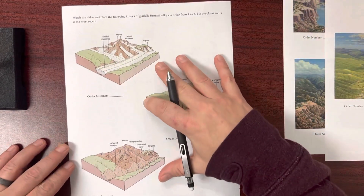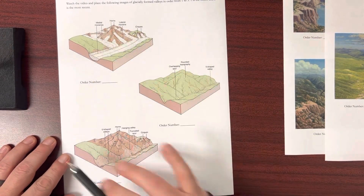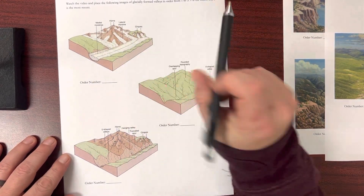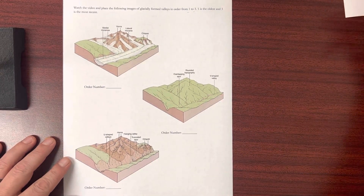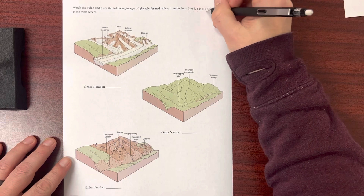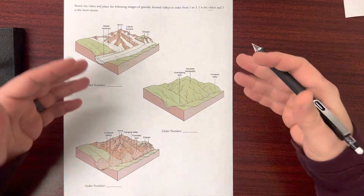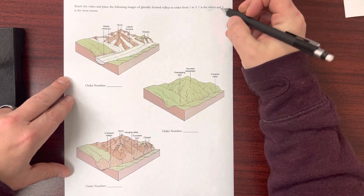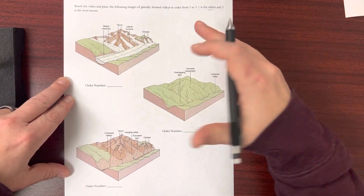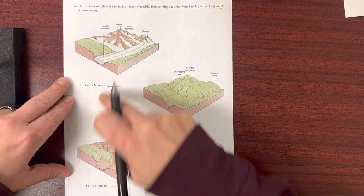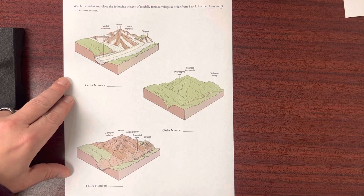There's also another page doing the same thing, but this one is a little more generic and we only have a one through three. You're still going to do the same thing — one is the oldest image, where the process started, and three would be the most recent or what it looks like today. Same thing: put the order number next to the image. Hope this helps.